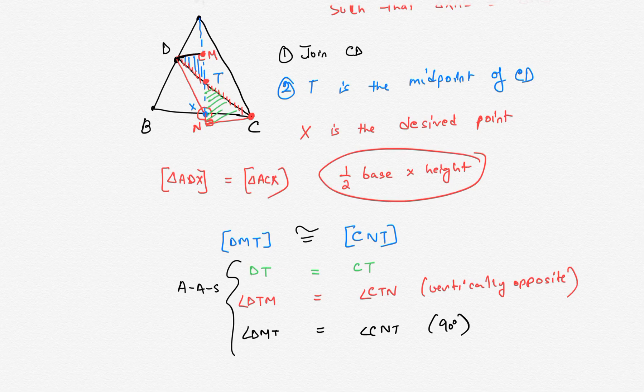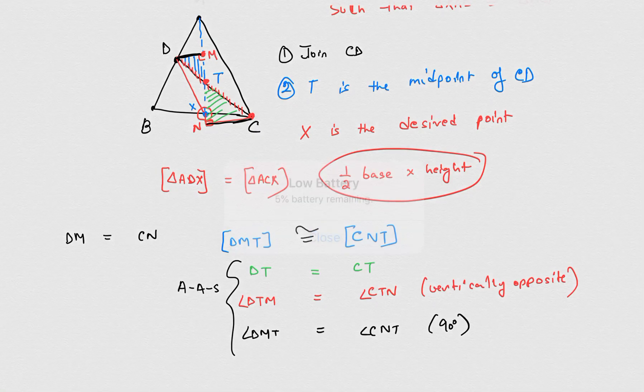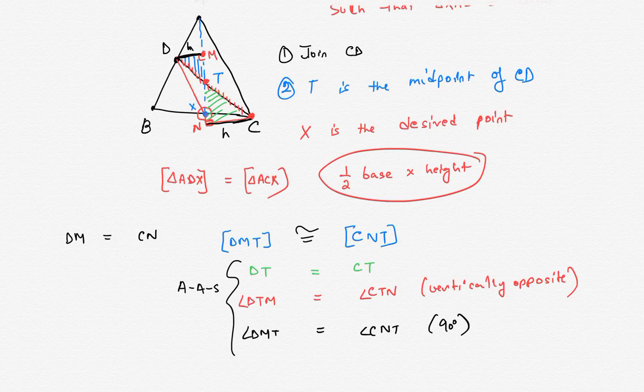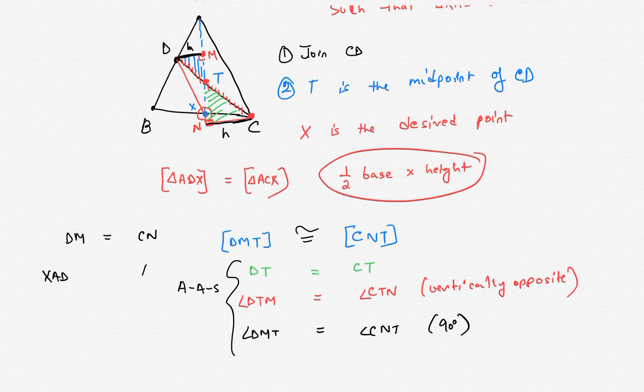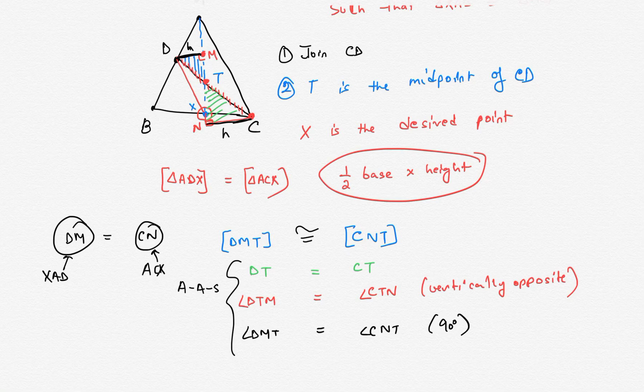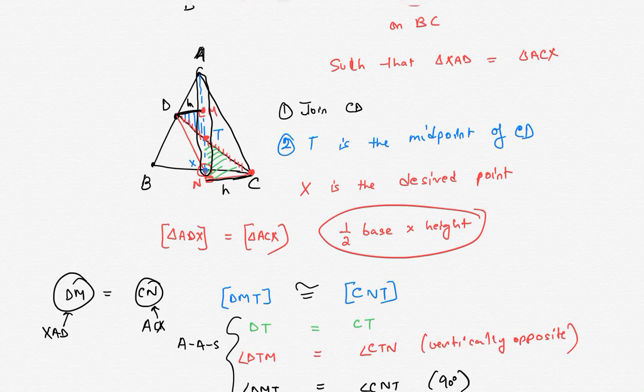Which means DM equals CN. But that's exactly what both of them are - the heights of triangle XAD and triangle ACX. Since the heights are equal and the base is AX, which is a common base, and the heights are equal, therefore these two triangles are congruent.